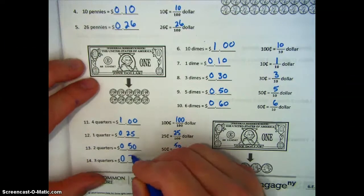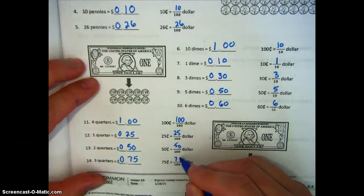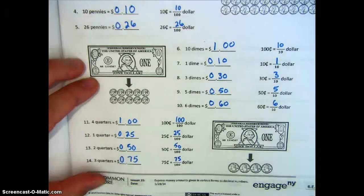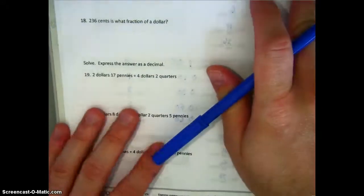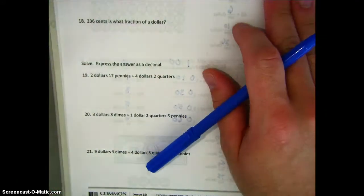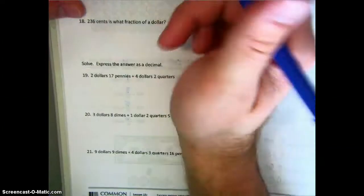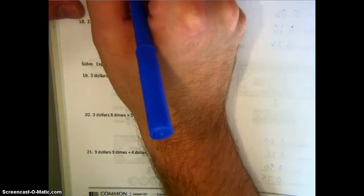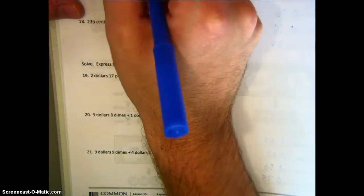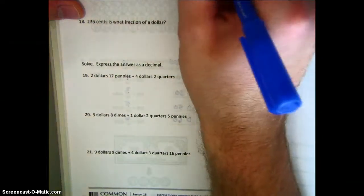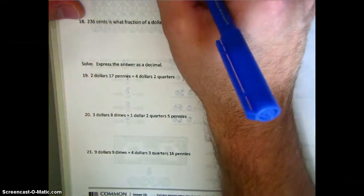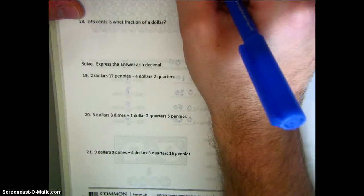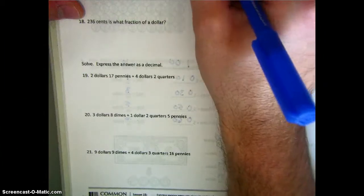Three quarters would become seventy-five cents, or seventy-five hundredths of a dollar. Next, we're going to give the total amount of money in fraction and decimal form. Three dimes is thirty cents, plus eight cents for the eight pennies, so we get thirty-eight cents. In fraction form that's thirty-eight hundredths, and in decimal form, thirty-eight hundredths.